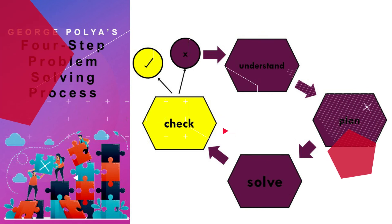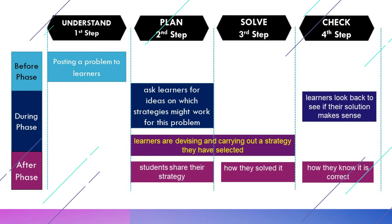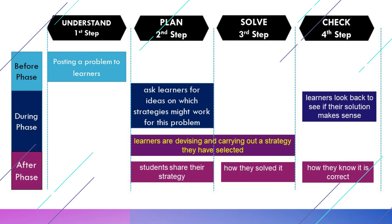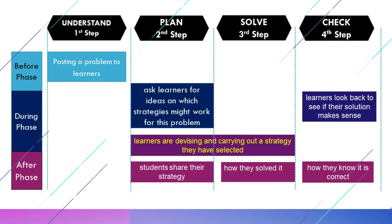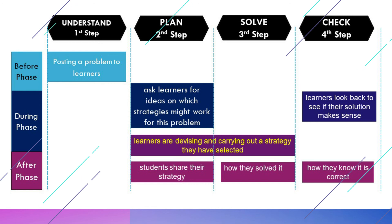Once you pose a problem to learners, your first step is to be sure they understand it, which is the first step of Polya's process. You may also ask learners for ideas on which strategies might work for this problem to get some ideas started for step two. In the during phase of the lesson, learners are devising and carrying out a strategy they have selected — that is step two and step three. Then they look back to see if their solution makes sense, which is step four.